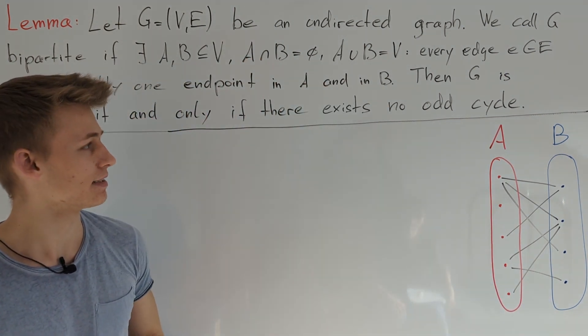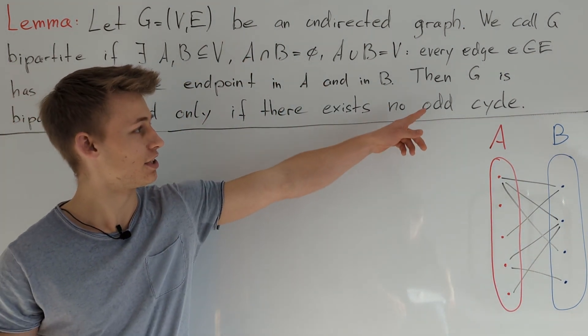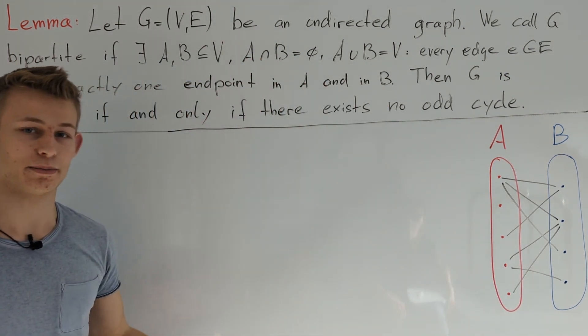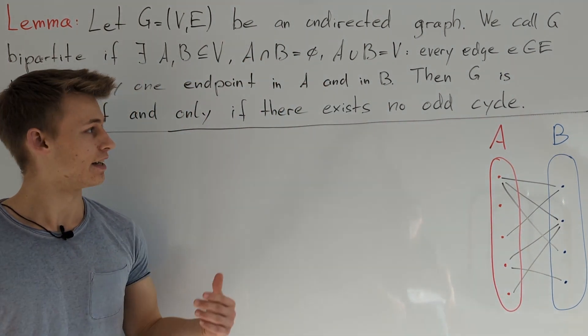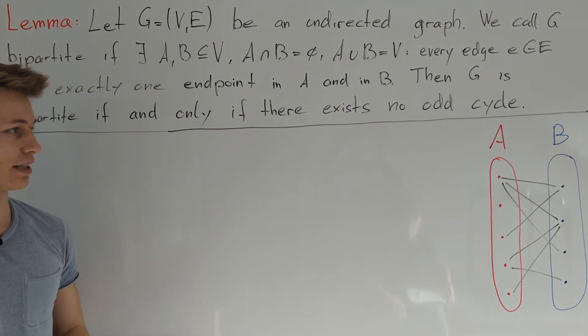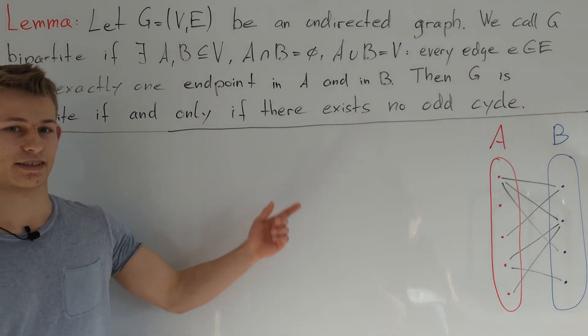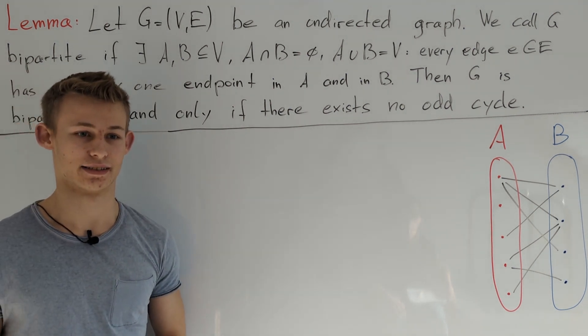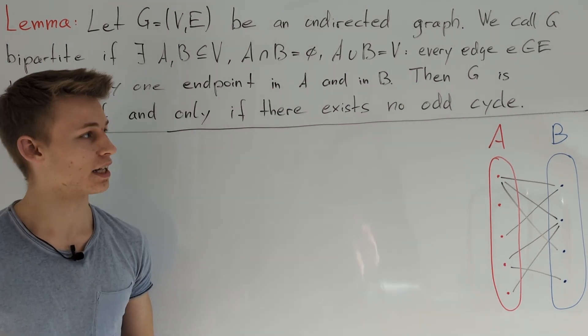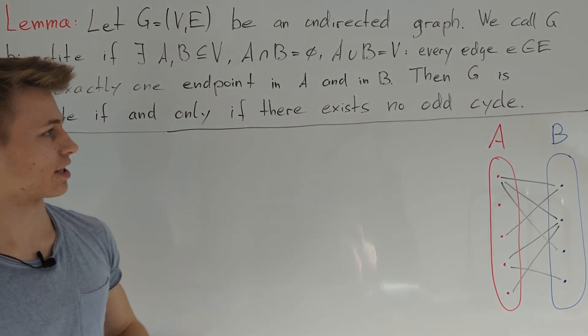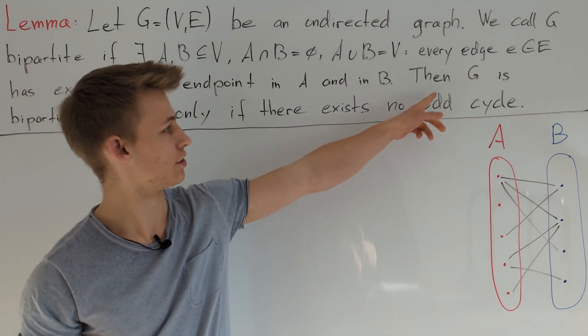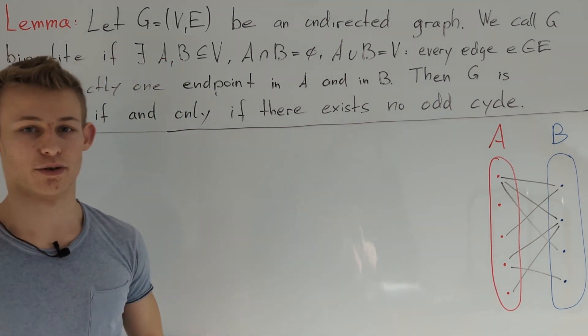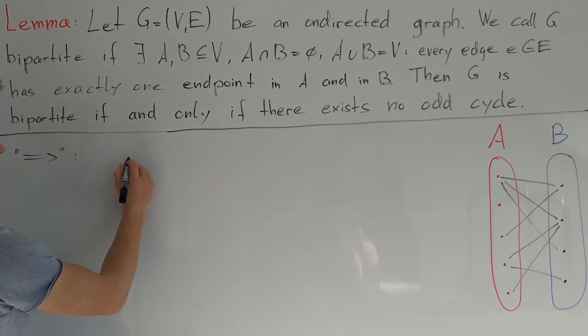The lemma tells us that G is bipartite if and only if there exist no odd cycles in G. First let's prove the direction: if G is bipartite then there is no odd cycle.